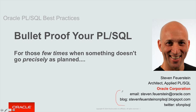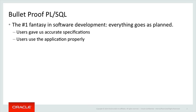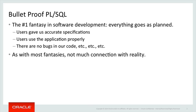Because sometimes, maybe just occasionally, things don't go precisely as planned. Bulletproofing PL/SQL — the number one fantasy in software development. Everything is going to go just like we planned it. We generally think: this time, contrary to every past experience, it's all going to work smoothly and according to plan. The users have to give us accurate specifications, use our application properly, and of course there are no bugs in our code. That's our fantasy — not much connection with reality.